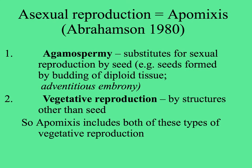Apomyxis is the general term for asexual reproduction. There are two kinds of reproduction without sex. Agamospermia substitutes for sexual reproduction by seed — things like seeds are made, but they're from budding of diploid tissue through a process called adventitious embryony. If you didn't know better, you'd think they're regular seeds, but they're all identical to the parent plant. Then there are many different kinds of vegetative reproduction by structures other than seeds. Apomyxis — asexual reproduction — includes both of these types.